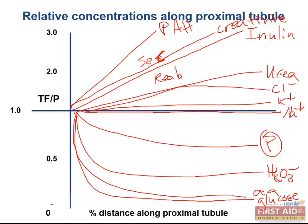For example, why does the line for inulin steadily increase over the course of the proximal tubule? Remember that since inulin is freely filtered but not reabsorbed, the amount of inulin in the tubule remains constant. But water is progressively reabsorbed with sodium, so the concentration of inulin gradually increases from beginning to end of the proximal tubule. Use this graph as a reference during your studies.